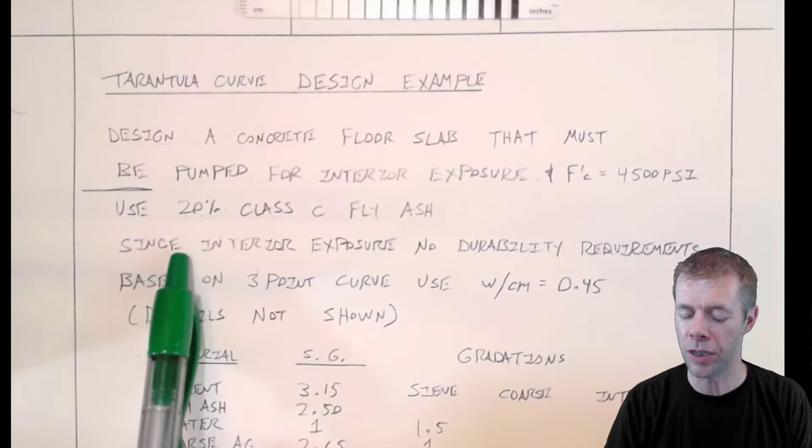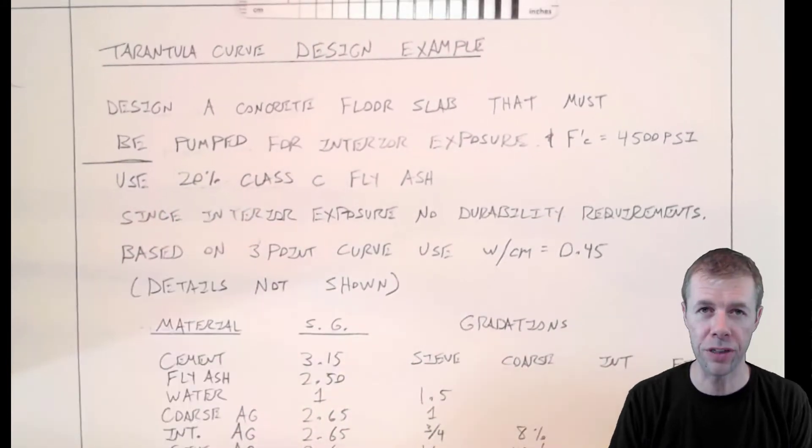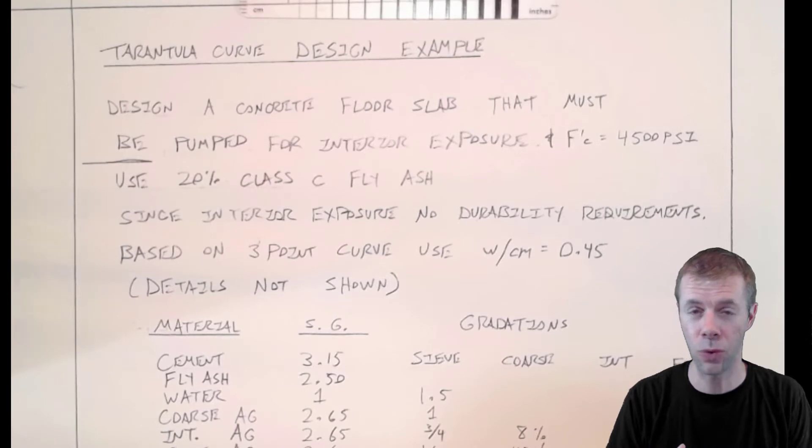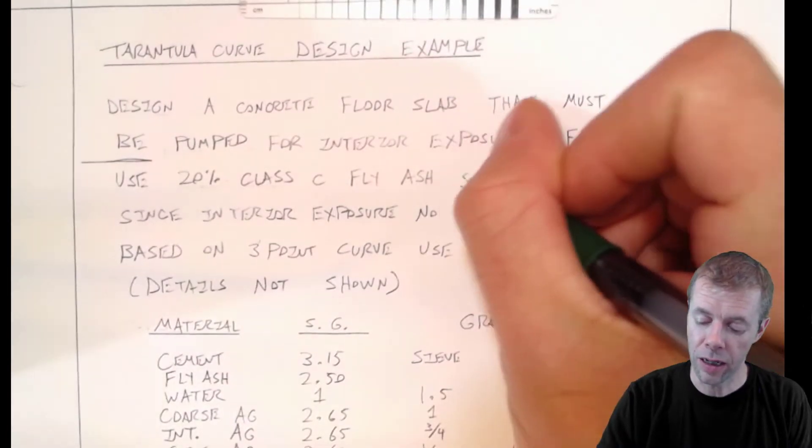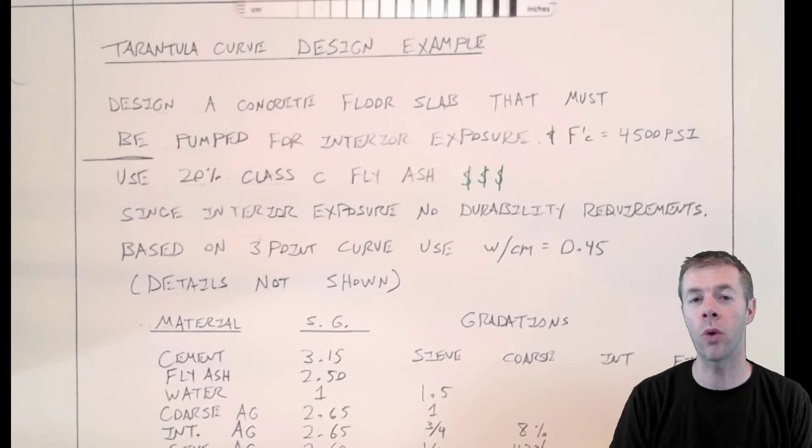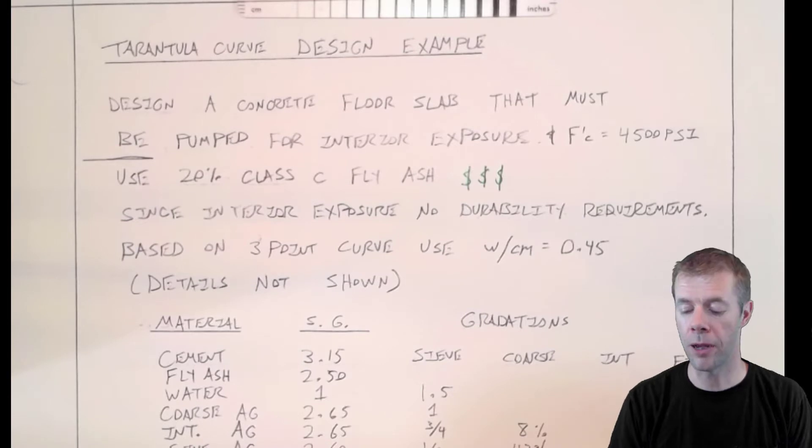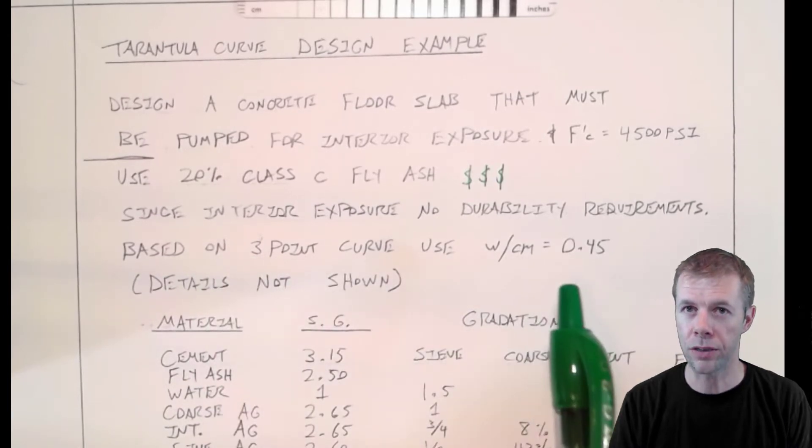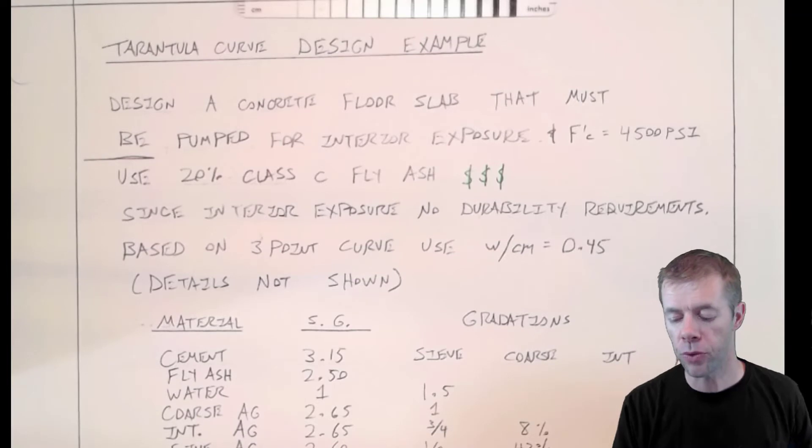Now, there's a couple of things we need to know. We're going to use 20% Class C fly ash. Why would you do that? Well, it's good to see different types of concrete mixtures being used. In a lot of places, fly ash is very prevalently used. So you should know how to design with it. But another big one is because of money. Fly ash isn't always cheaper, but historically it's been cheaper than Portland cement. So to save money. Since there's interior exposure, there's no direct durability requirements. And based on the three point curve, we're going to use a water cement ratio of 0.45.